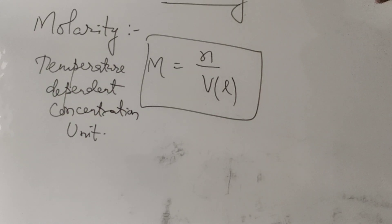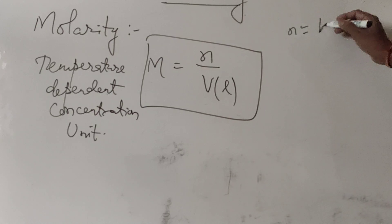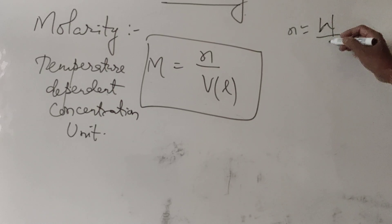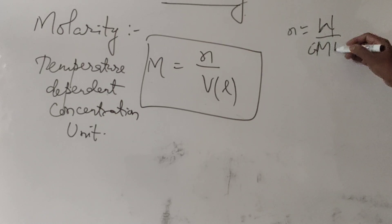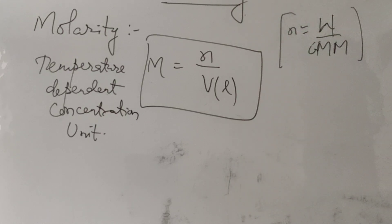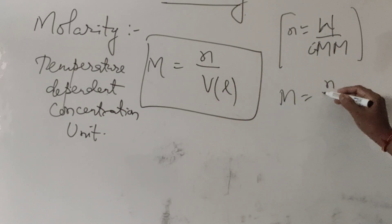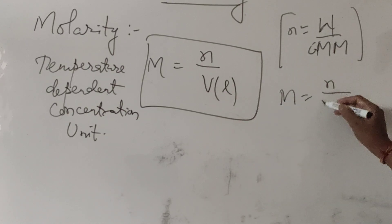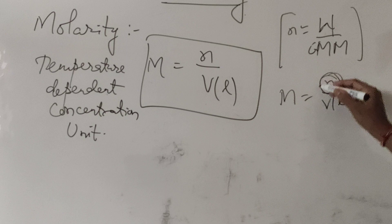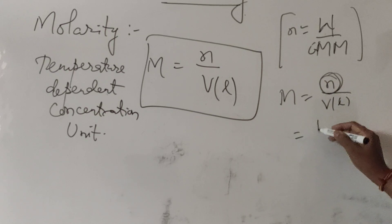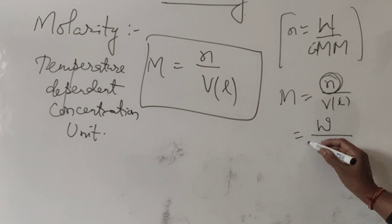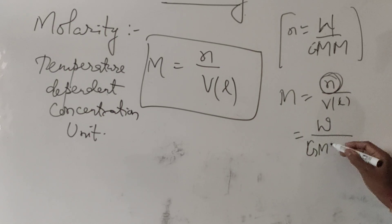The number of moles is given by weight divided by molecular mass, or gram molecular mass. So number of moles equals weight by gram molecular mass. We can write molarity as equal to number of moles by volume in liters, and in place of number of moles we can write weight of the solute by gram molecular mass.